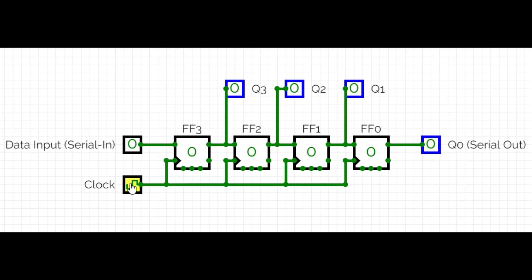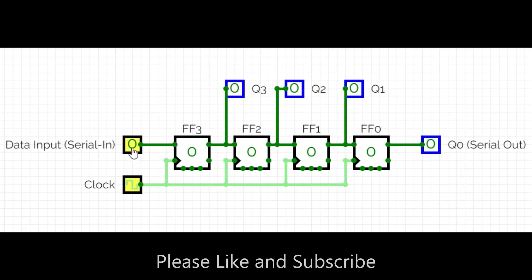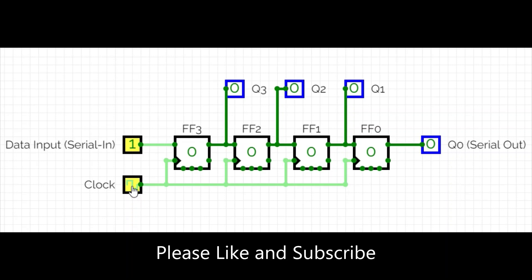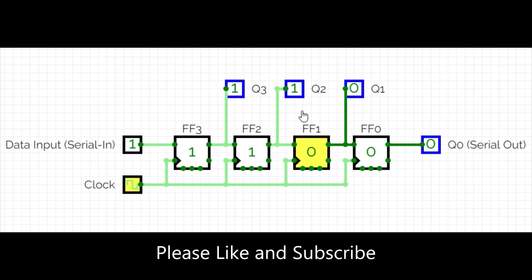When we apply the first clock, we changed the input to one. You can see the first clock is applied, and the D input is transferred to FF3. Now we will apply the second clock. This is a positive edge-triggered flip-flop, so I make it negative then positive again. This one is transferred to the next flip-flop — we didn't change the input. At the second clock, this one is transferred further.